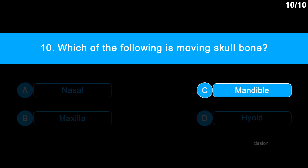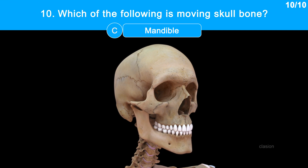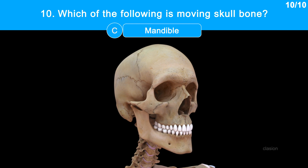The correct answer is Option C: Mandible. Check your mandibular movement — the mandible is the movable bone of the skull, following the temporomandibular joint with the temporal bone. We can move only our lower jaw and not our upper jaw.